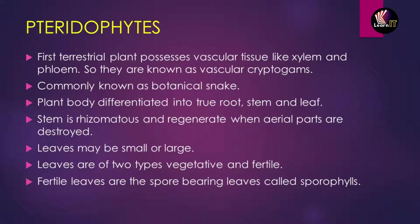They are called botanical snakes because of their analogy with reptiles as the first land organisms. In Pteridophytes, the plant body has been differentiated into three types: true stem, true root, and leaves. These plants contain all three — root, stem, and leaf. The stem is rhizomatous and regenerates when aerial parts are destroyed.